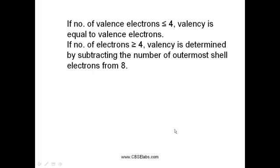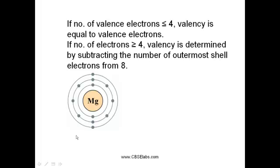Let us look at the electronic configuration of magnesium. Here, the outermost shell is the M shell. The electrons present in the outermost shell are nothing but the valence electrons. So here we have two valence electrons in the outermost shell. According to the first case, if the number of valence electrons are less than or equal to 4, then the valency is equal to the number of valence electrons.